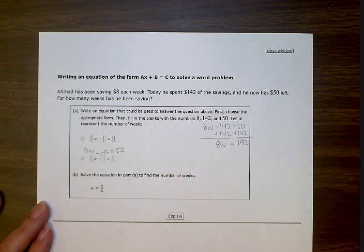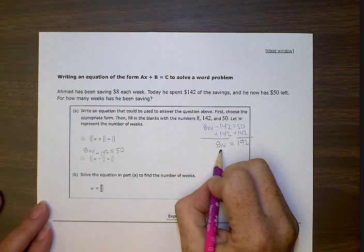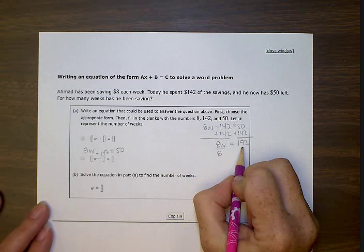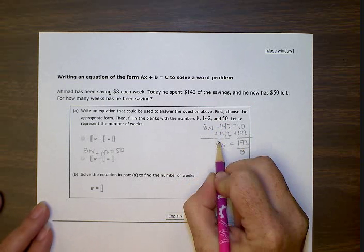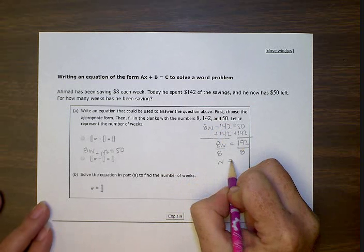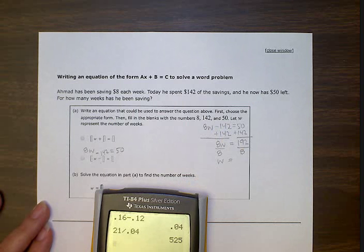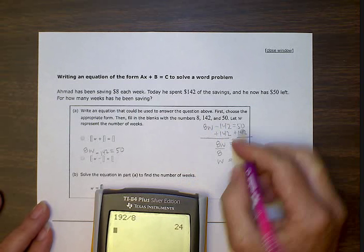So to get W by itself, it's currently being multiplied by 8. So let's divide by 8 to get rid of that coefficient. And then this will end up being 1W. So let's use our calculator. Let's take 192 and divide it by 8. That gives us 24 weeks.